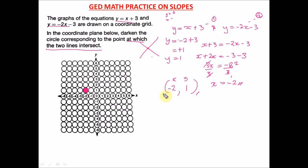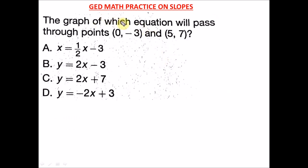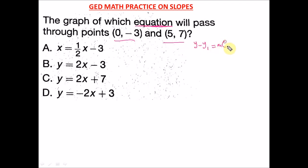Next question: the graph of which equation will pass through these two points? We are looking for the equation of the particular line that passes through the two given points. First, find the slope. Since we have two points it's easy to get the slope, then we slot it into the point-slope equation: y − y₁ = m(x − x₁). This formula is given in your formula sheet.